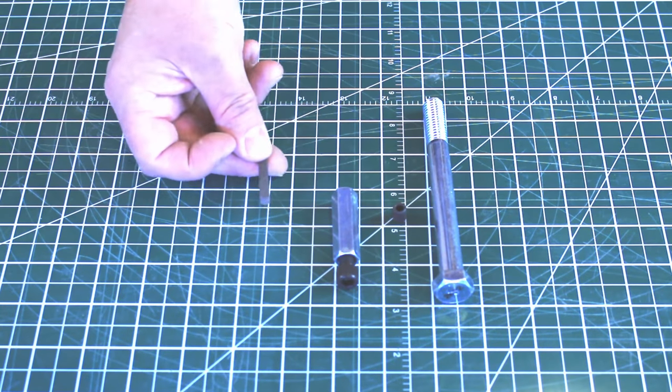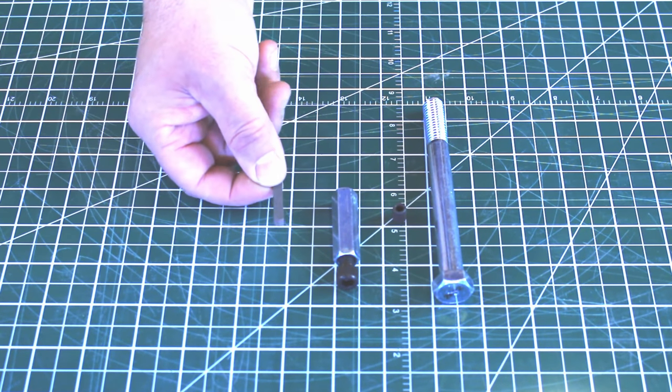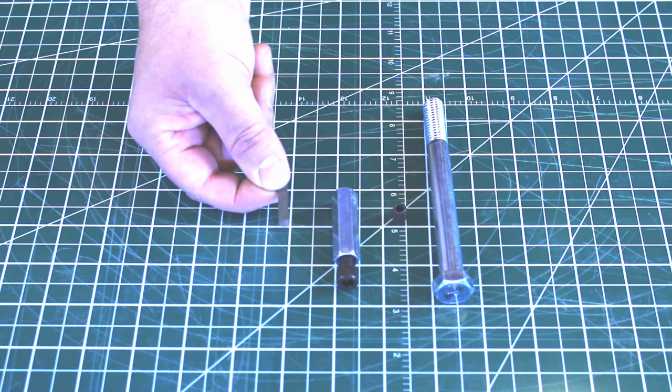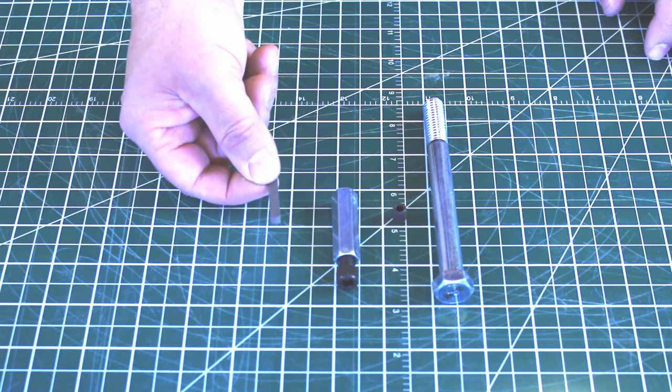You also need a grommel blade. Now the grommel blade is sold by Luthier Mercantile Incorporated. It's on the internet and I will leave a link to this blade in the description.